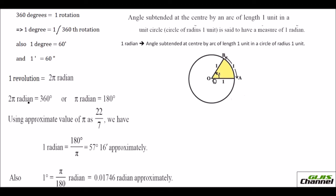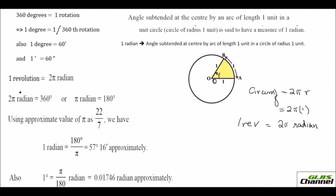Here we have seen the degree measures. One rotation means you look at the circumference of this circle. The circumference formula is 2πr. Here r is 1 unit, so that would be 2π. So for one revolution you get 2π radians. Since one revolution is 360 degrees, you can say 2π radians equals 360 degrees, or dividing both sides by 2, π radians equals 180 degrees. If you can remember this, it will help you in converting degree measures to radians and radians to degree measures.